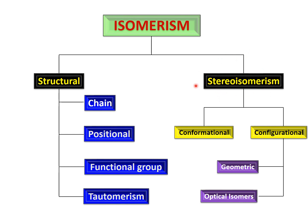Generally there are two types of isomerism: one is structural isomerism — sometimes also known as constitutional isomerism — and the other is stereoisomerism. Structural isomerism mostly deals with the structure of the molecule, while stereoisomerism deals with the arrangement of groups in three-dimensional space. Structural isomerism can be of different types: chain isomerism, positional isomerism, functional group isomerism, or even tautomerism.